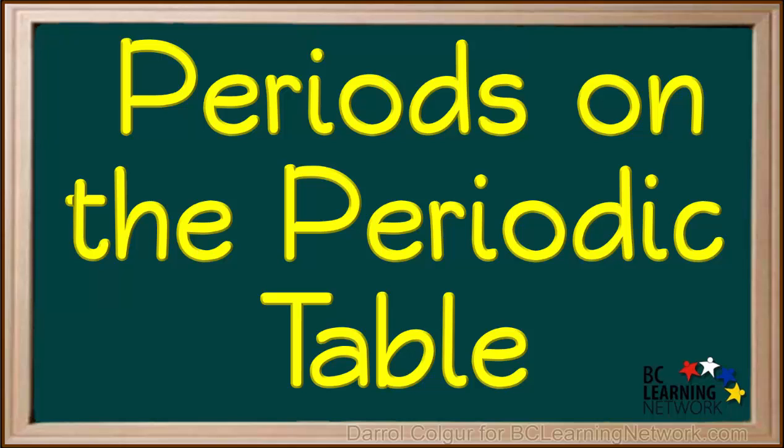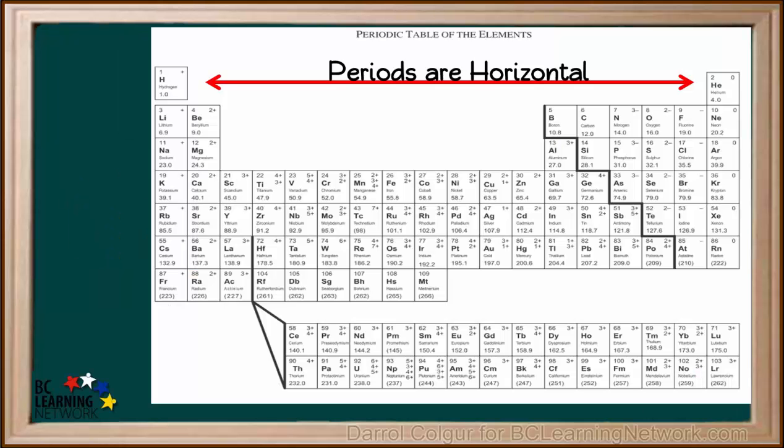Here, we'll show you how to find the seven periods on the periodic table. Periods are also called rows. Rows, or periods on the periodic table, are horizontal.